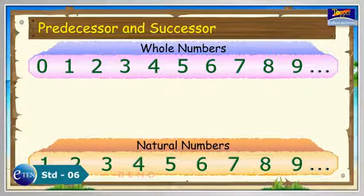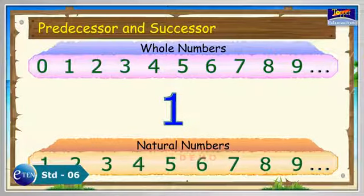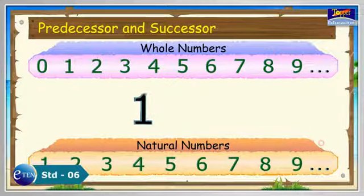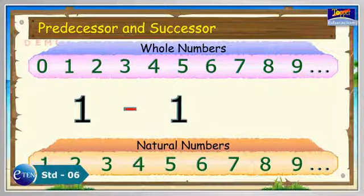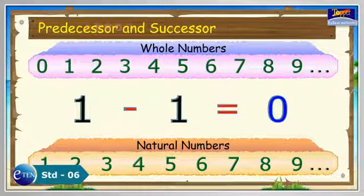The natural number 1 does not have a predecessor because 1 minus 1 equals 0, and 0 is not a natural number.